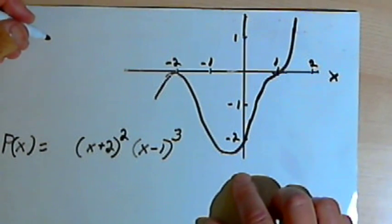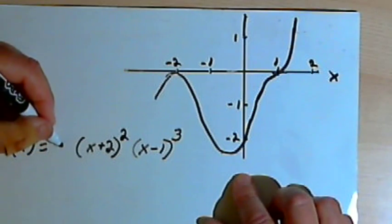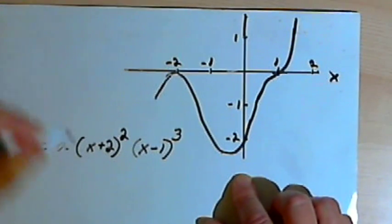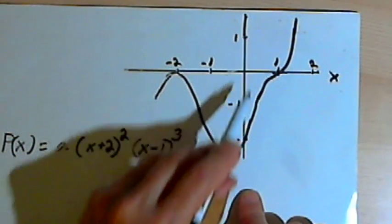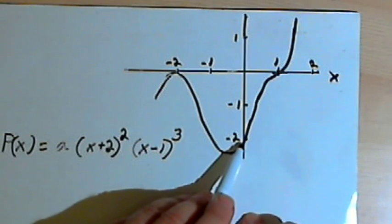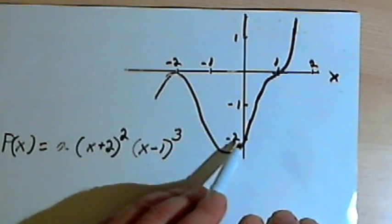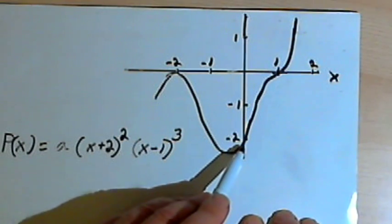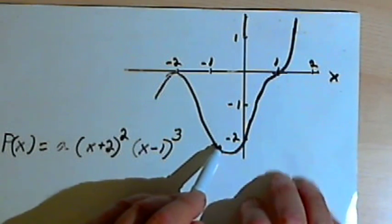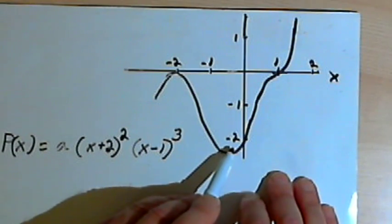And then we're going to need some point so we can find out what the constant a is. We've got a point. It's on the y-axis at negative 2. So we've got a point 0 comma negative 2 where the graph crosses the y-axis. So the 0 is an x-value. The negative 2 is a y-value.